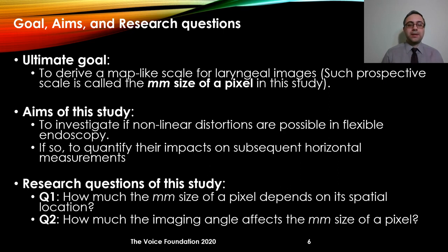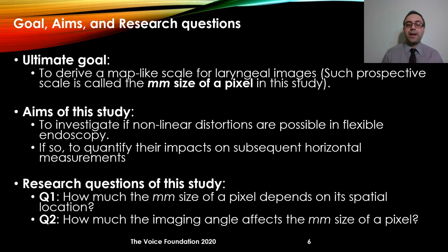The ultimate goal of this research is to derive a map-like scale for laryngeal images. In this study we will call that scale the millimeter size of a pixel. The specific aims are to investigate if nonlinear distortions are present in flexible endoscopy, and if so, to quantify their impact on subsequent horizontal measurements. There are two research questions: first, how much the millimeter size of a pixel depends on its spatial location, and second, how much the imaging angle affects the millimeter size of a pixel.